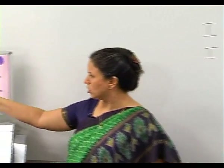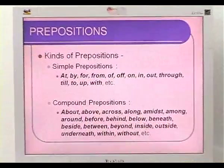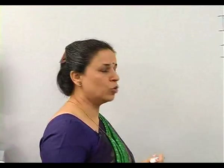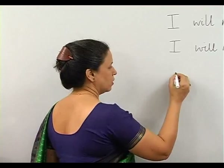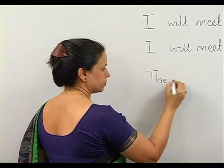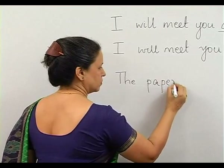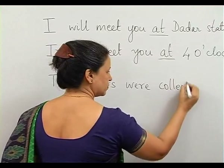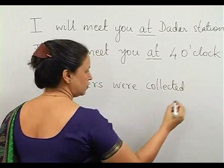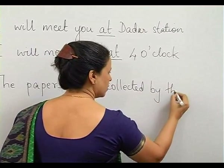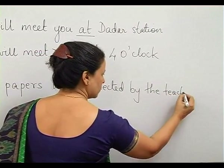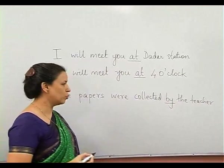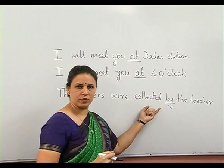Now if we look at the next preposition: 'by'. By can be used in many, many ways. For example, if I want to say by whom something is done — like, 'The papers were collected by the teacher.' Here 'by' shows you by whom it was done — kiske dwara kiya gaya.